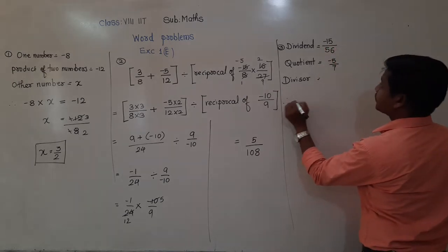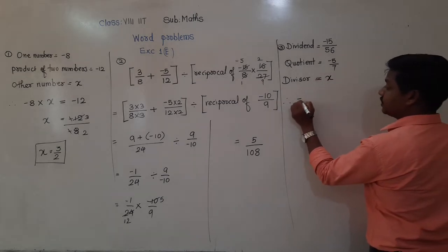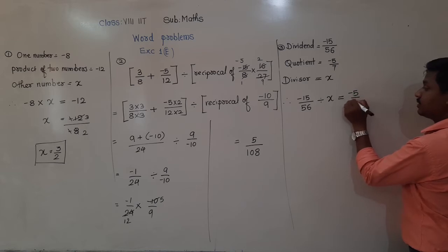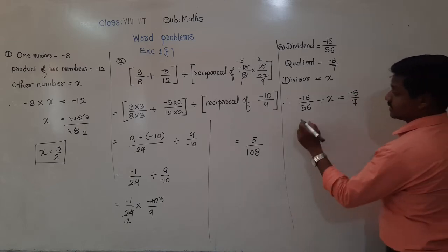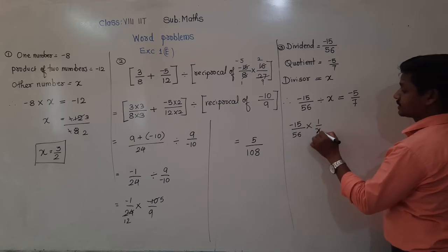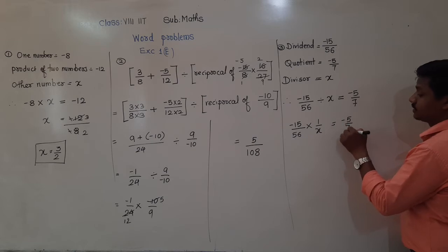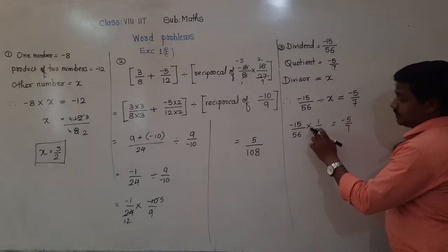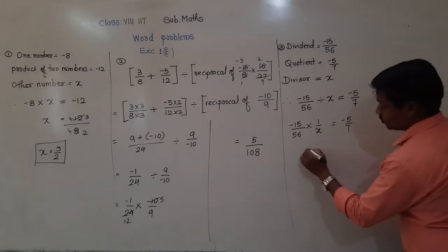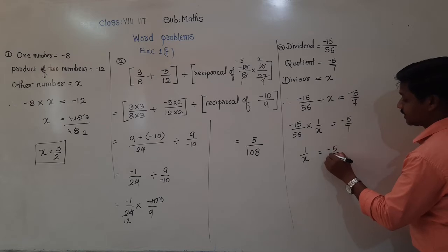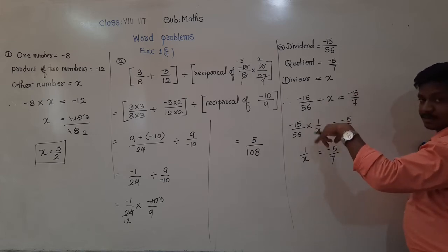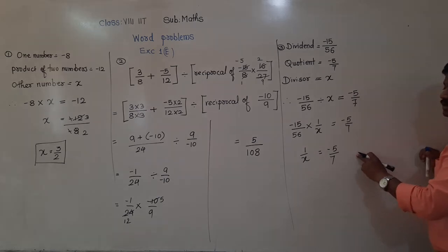The equation will be: minus 15 upon 56 divided by x is equal to minus 5 upon 7. Division by x means multiplying by 1 by x, so minus 15 upon 56 times 1 by x equals minus 5 upon 7. Bringing minus 15 upon 56 to the right side, the numerator goes to the denominator and denominator goes to numerator: 1 by x equals minus 5 upon 7 times 56 upon minus 15.